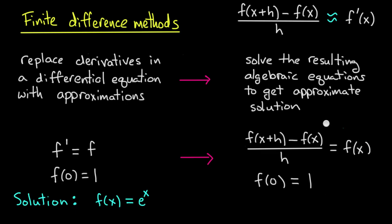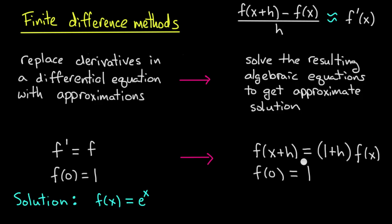Now let me rewrite this first equation just slightly so it's a little more suggestive as to how we're going to solve it. So I'll multiply both sides by h, and add my f(x), and it turns into f(x+h) equals (1+h) times f(x).